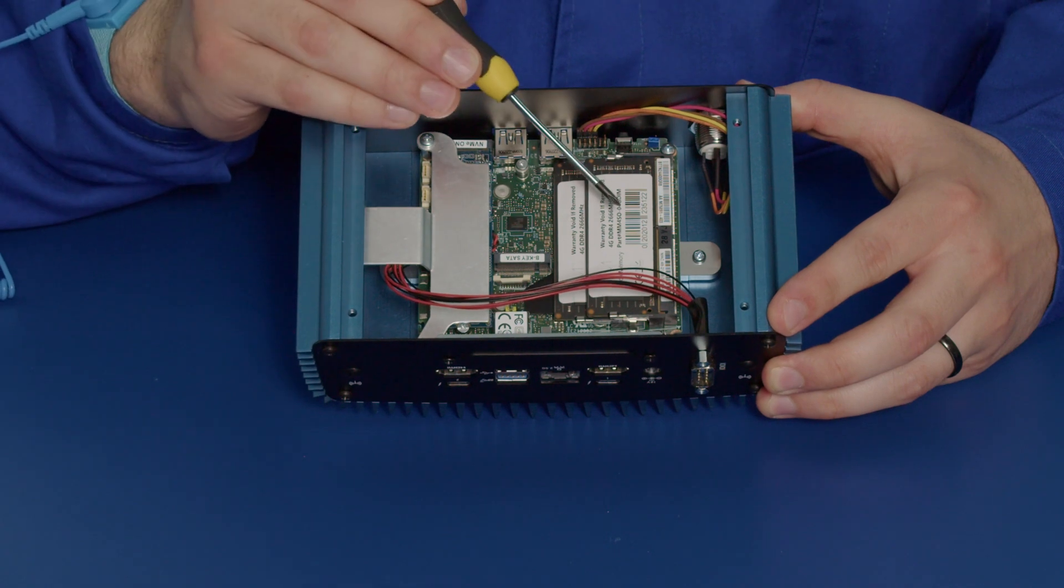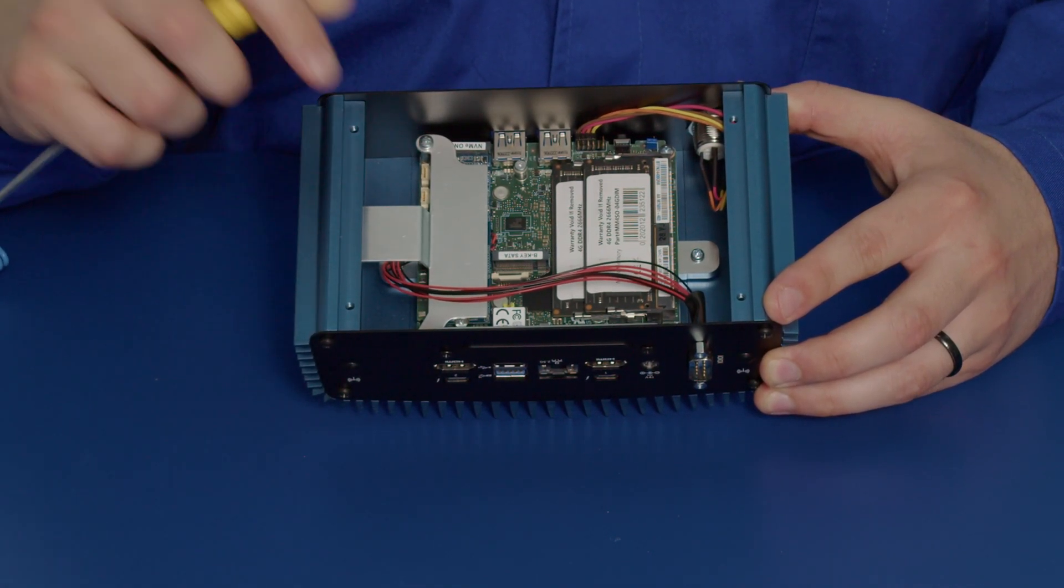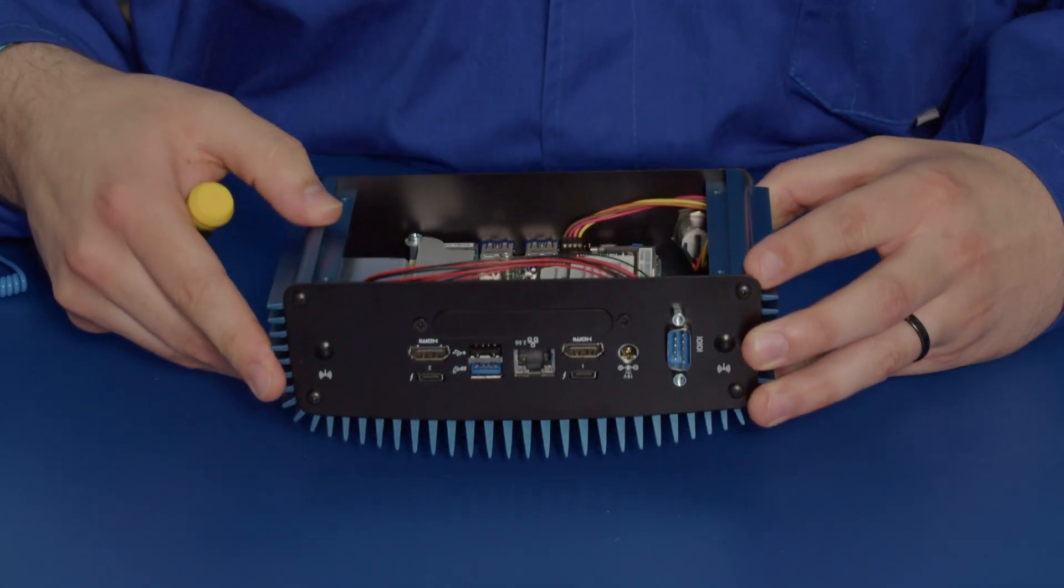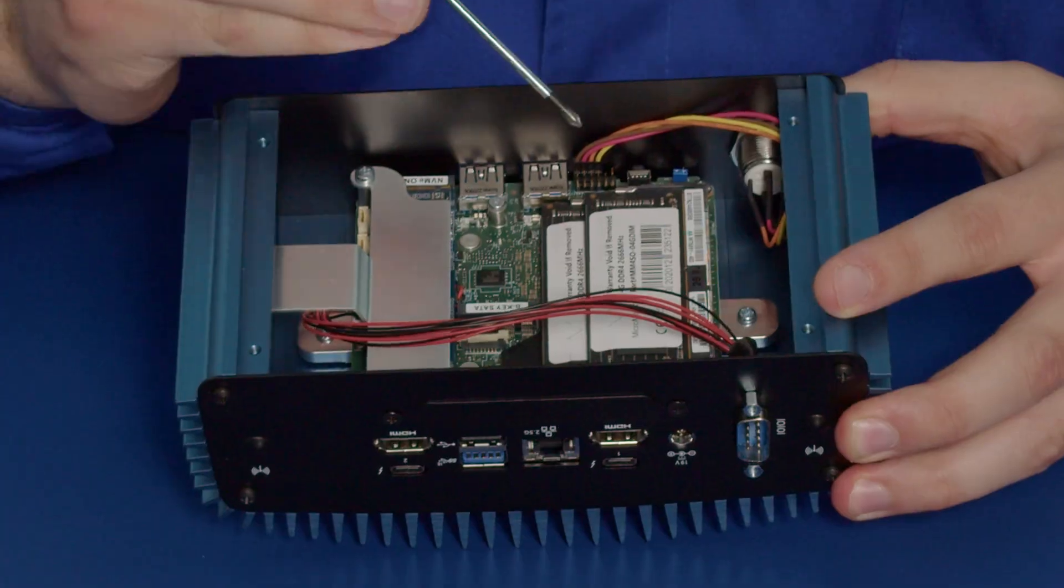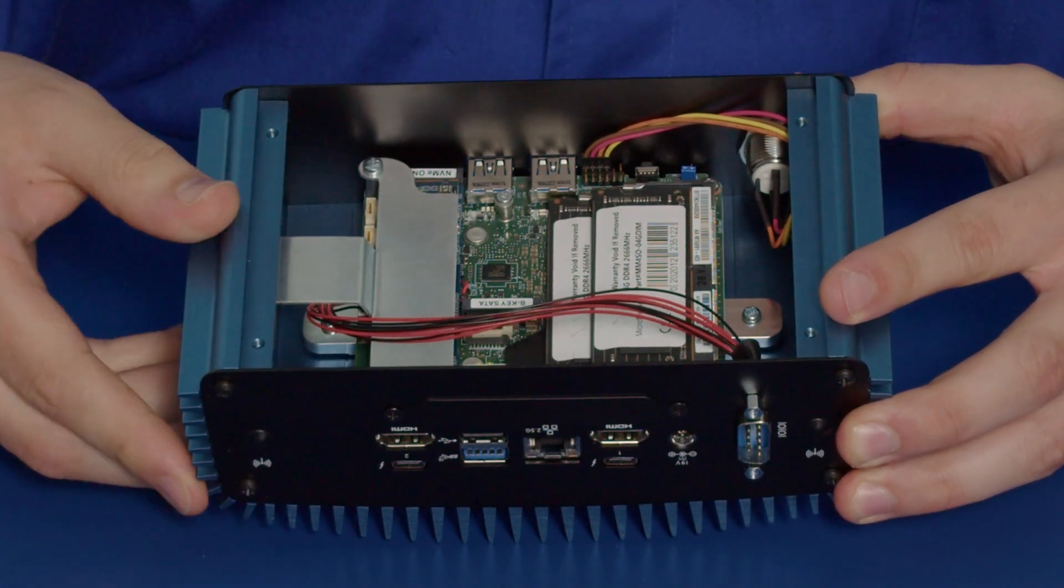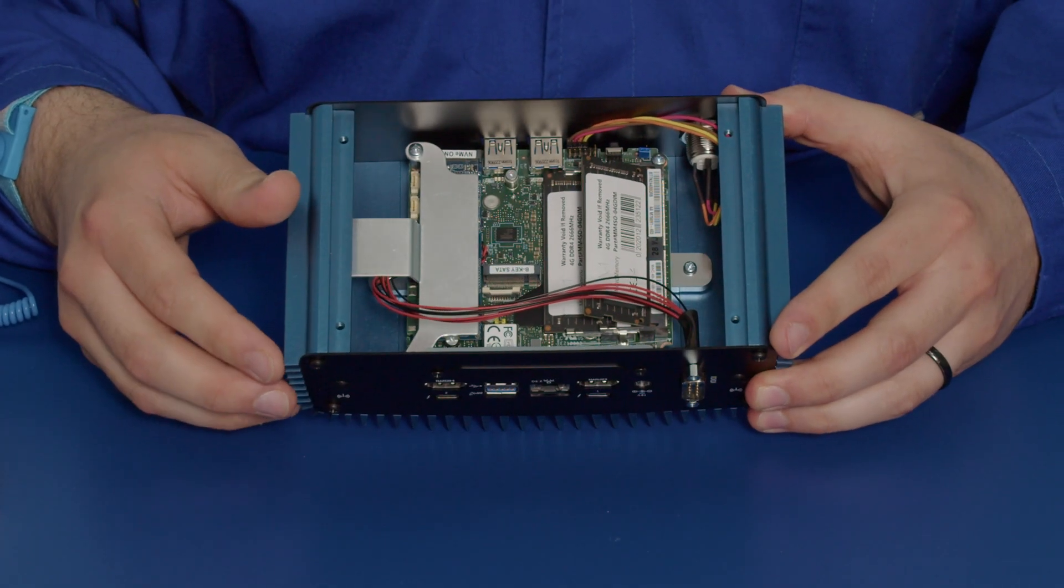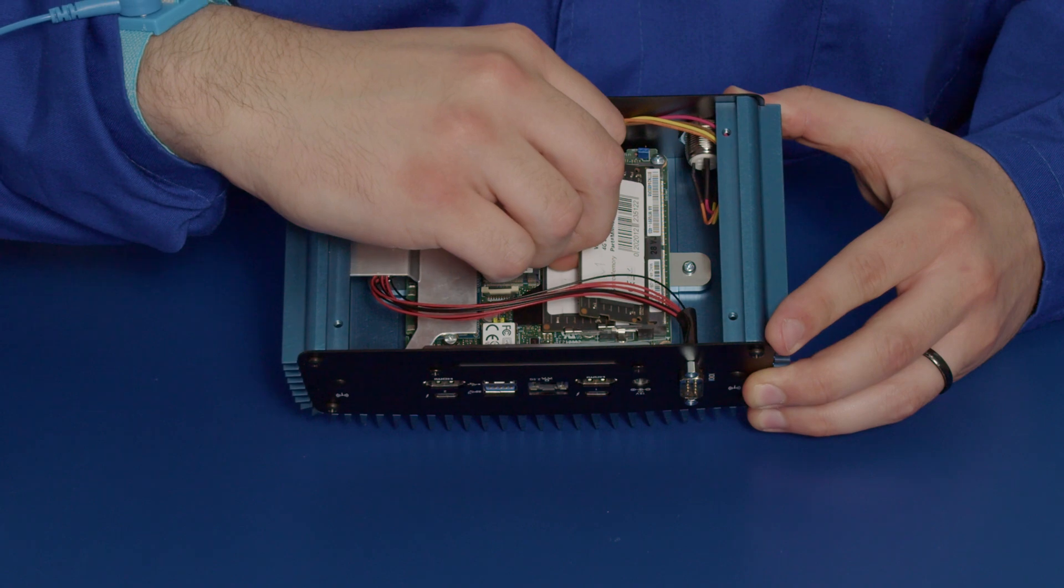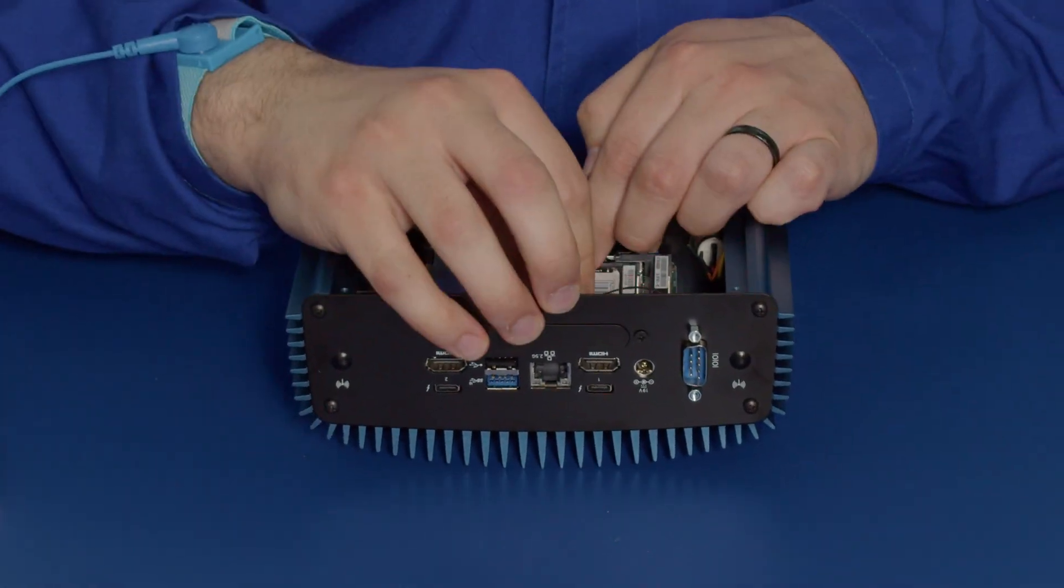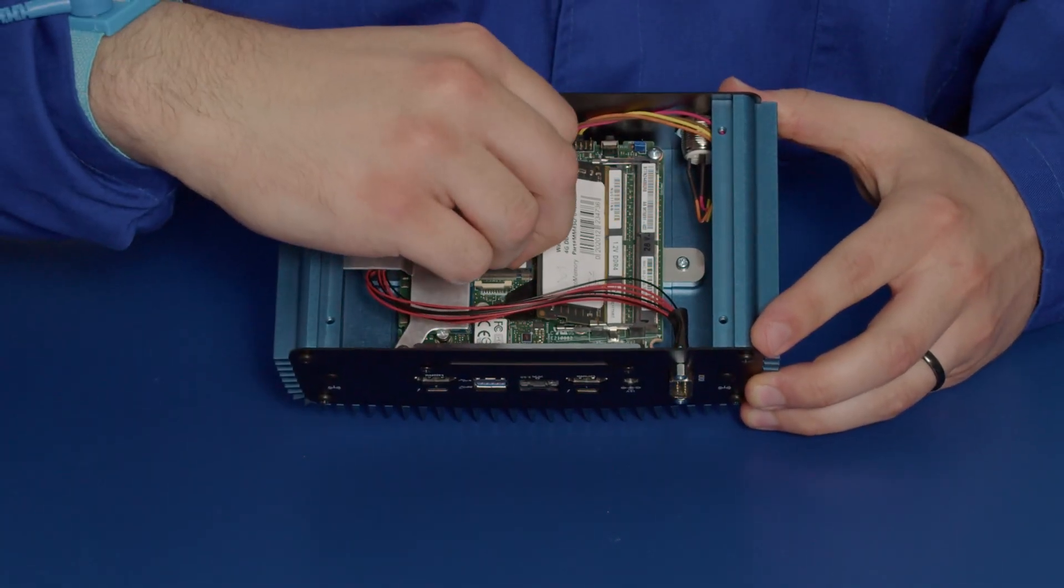So here we have our RAM and our SSD underneath an SSD heatsink and this differs from the 4x4 unit. To take out the RAM you need to clip out these two little metal clips on the side of the RAM. The RAM will pop up at a 45 degree angle and then you can pull it straight out, and you can do the exact same with the RAM underneath it.